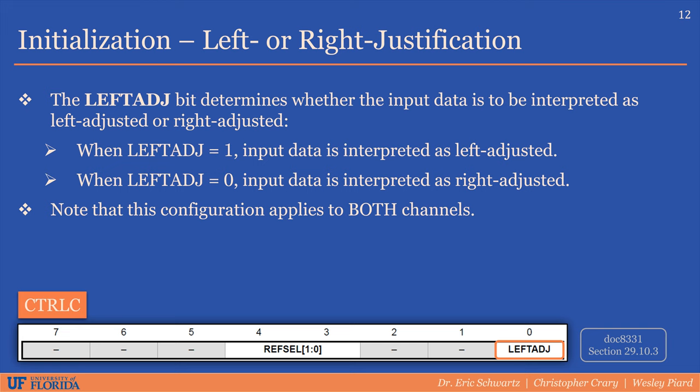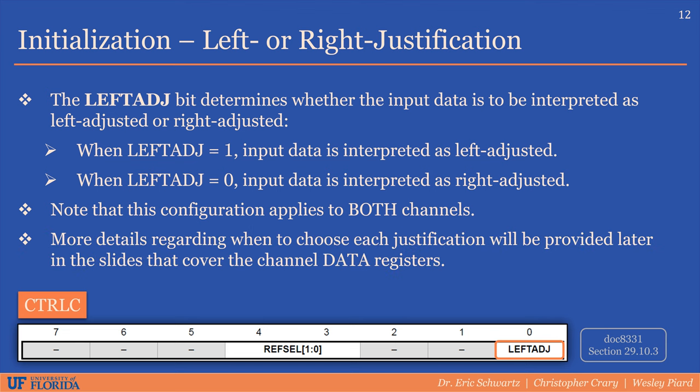Note that this configuration applies to both channels, so if you wish to have part of your program use right justified data and another part use left justified data, you can't do that with a single DAC module. More details regarding when to choose each justification will be provided in later slides after we discuss the data registers.